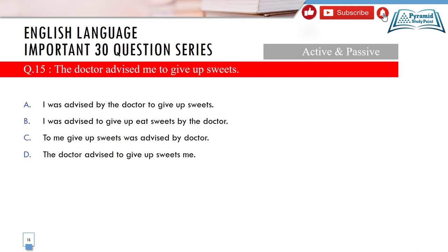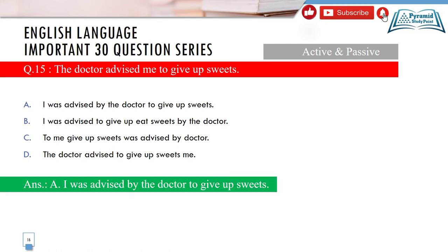Question 15 is another active/passive voice question. The sentence is: 'The doctor advised me to give up sweets.' Option A: 'I was advised by the doctor to give up sweets.' Option B: 'I was advised to give up its sweets by the doctor.' Option C: 'To give up sweets was advised by the doctor.' The correct answer is option A — 'I was advised by the doctor to give up sweets.' If you want a special video on active/passive or direct/indirect speech, let me know in the comments.